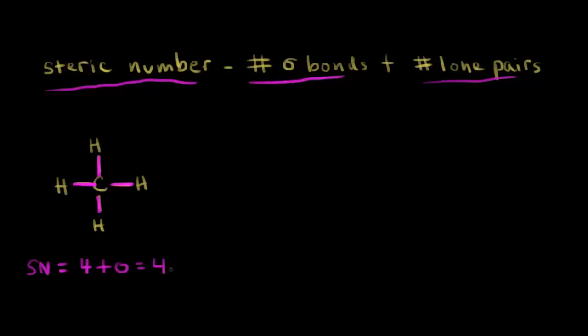In the last video, we saw that in the sp3 hybridized situation we get four hybrid orbitals, and that's how many we need. The steric number tells us we need four hybridized orbitals. So we took one s orbital and three p orbitals, and that gave us four sp3 hybrid orbitals. So this carbon must be sp3 hybridized.